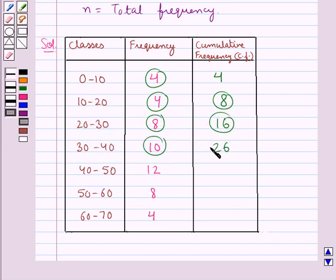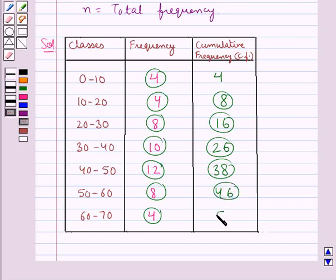Cumulative frequency for class 40 to 50 is 12 plus 26, which is 38. Cumulative frequency for class 50 to 60 is 8 plus 38, which is 46. Cumulative frequency for class 60 to 70 is 4 plus 46, which is 50.